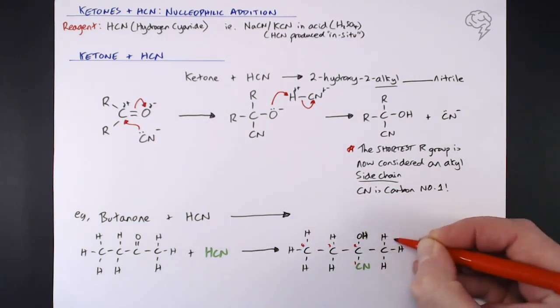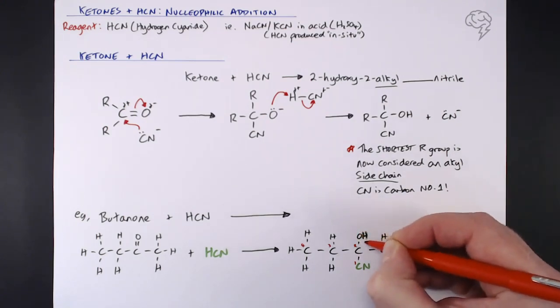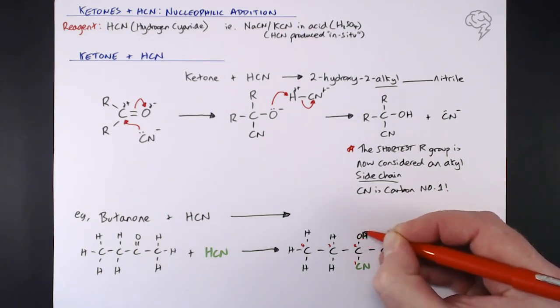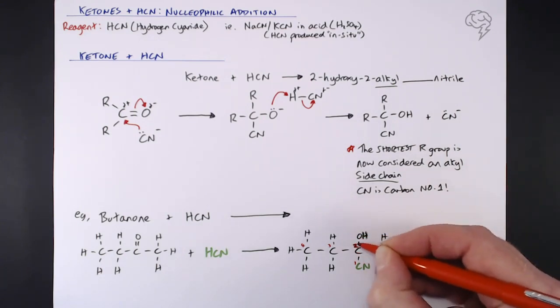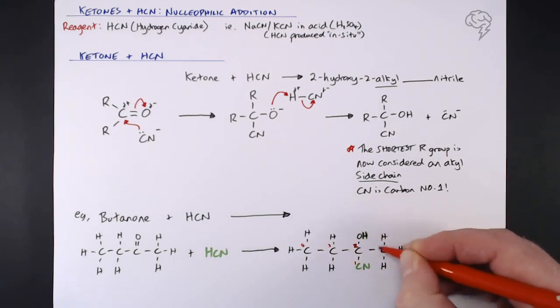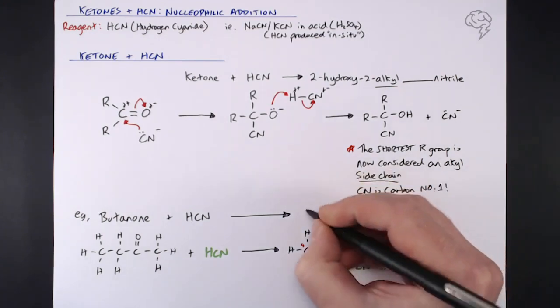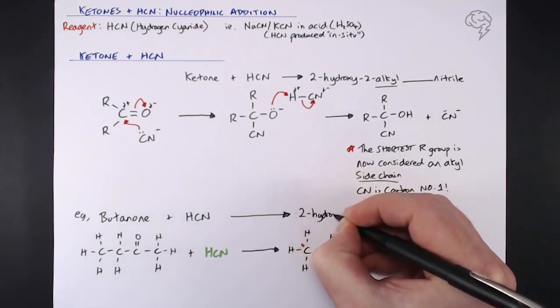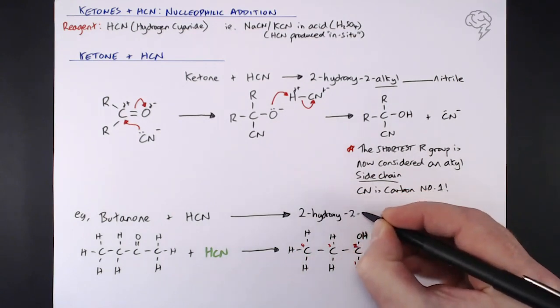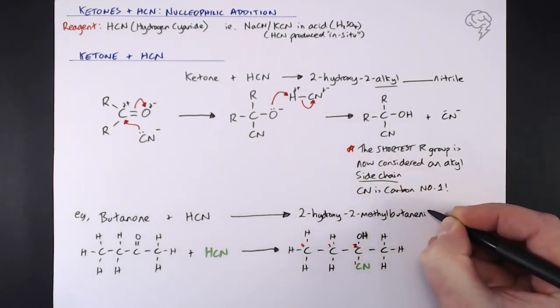This is our other R group, now considered an alkyl side chain - a methyl side chain. We've got our hydroxy group, and notice this is carbon number two, where our hydroxy group is and where our methyl side chain is. Using the naming convention, we've got 2-hydroxy-2-methyl butanenitrile.